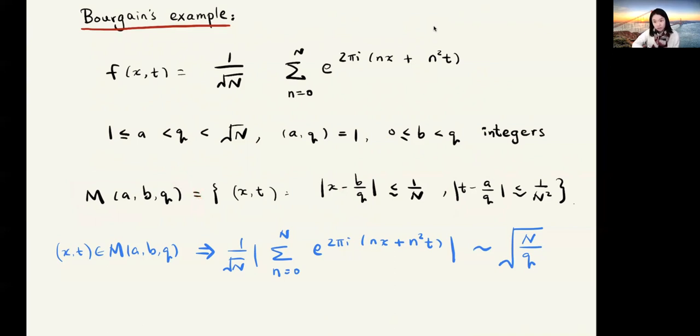So why do we define such a set? Using some number theory result, one can see that for x and t in M(a,b,q), f(x,t) is roughly square root of n over q. I think this is related to the major arc in the Hardy-Littlewood circle method. Now we kind of quantify how the level set looks like for our f.